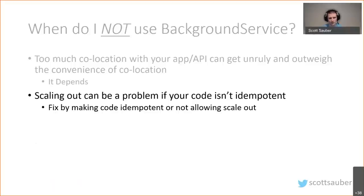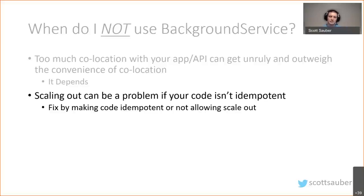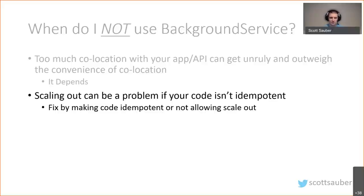When do you not use BackgroundService? If you co-locate too many background services with an existing app, they share the same CPU, memory, and network, creating a noisy neighbor situation. Also consider scale-out: if your code is not idempotent and you scale to multiple instances, you'll have multiple instances of the same background service running. Ensure your code is idempotent, use a message queue with once-delivery guarantees, or check if a message was already processed before acting.